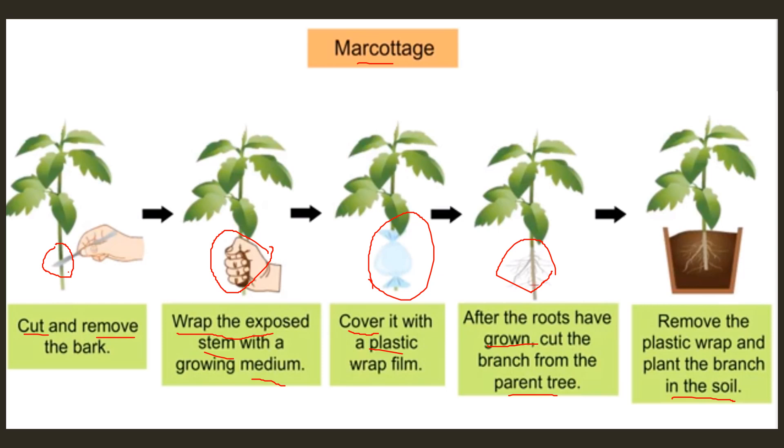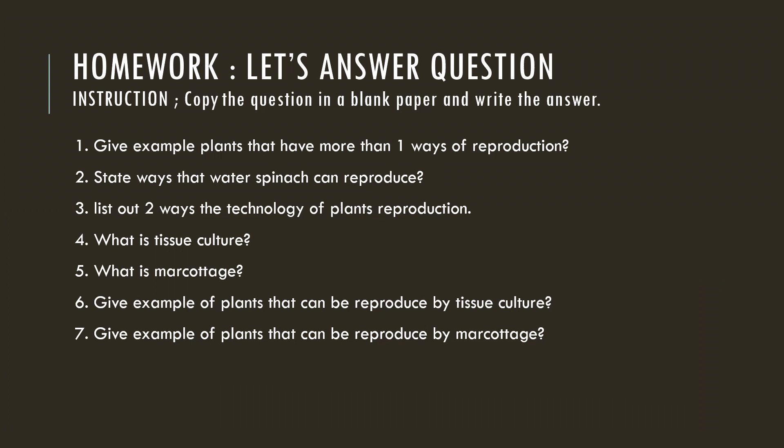So those are the steps for the marcottage technique. Let's recap what we have learned from this lesson. You have to remember the plants that can be reproduced in more than one way. Examples are basil, water spinach, and sweet potato.